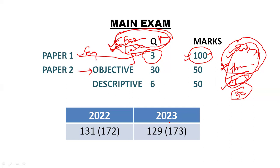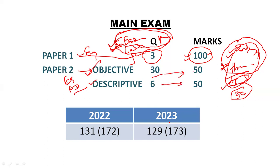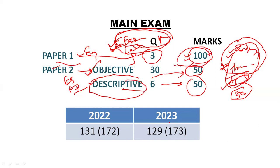Paper 2 is Economic and Social Issues and Rural Development. There will be 30 objective questions and 6 descriptive questions. The 30 objective questions will form 50% of your marks, that is 50 marks, and the 6 descriptive questions will form the remaining 50 marks. So 150 marks out of 200 are descriptive — it's less about how much you know and more about how well you express it, and also how good you are with time, because you have to type your answers. You need practice.